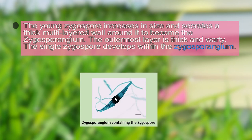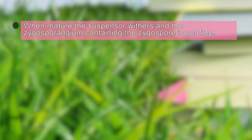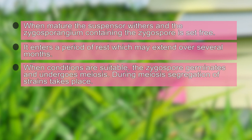Here you can see a picture of the zygosporangium, which has a single zygospore. The outermost layer is thick and warty, and the single zygospore develops within the zygosporangium. After formation, the mature suspensor withers and is lost. The zygosporangium containing the zygospore is set free, then enters a period of rest which may extend over several months.